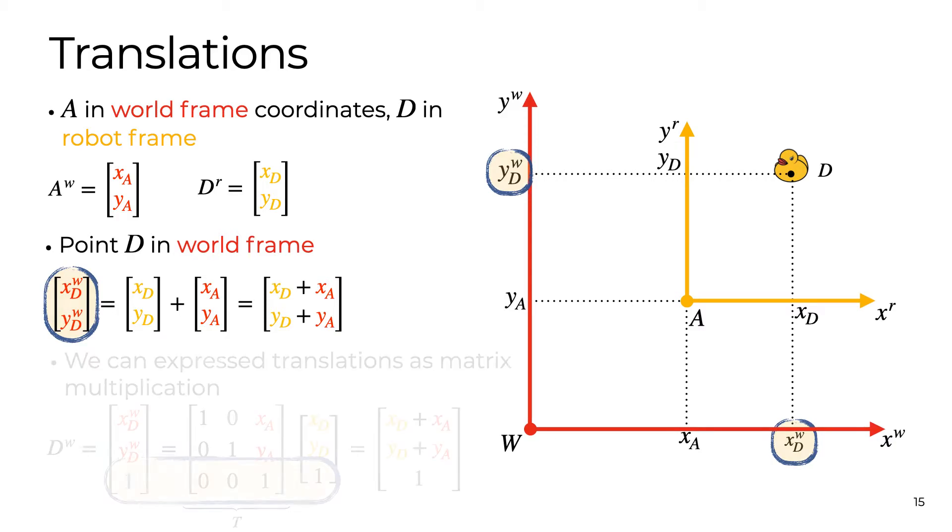Straightforward, right? Now let's use a mathematical trick. If we add a dummy dimension and choose the elements of the translation matrix carefully, then the final result is the same as summing the coordinates along each axis. We're just writing out the same operation in a different form, and the advantage will become clear later.